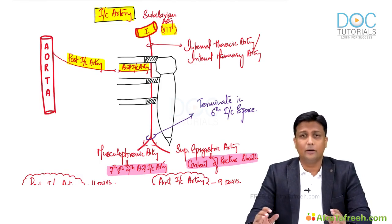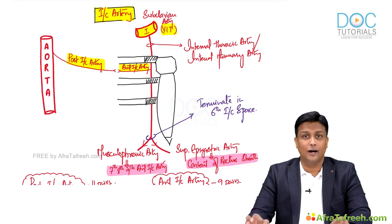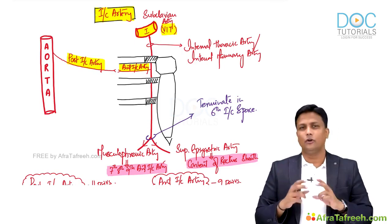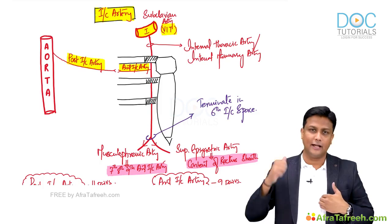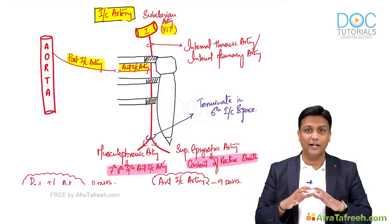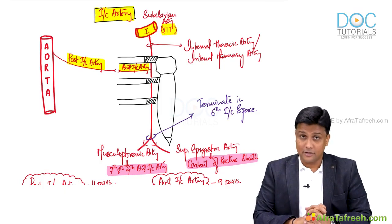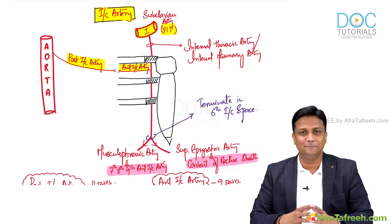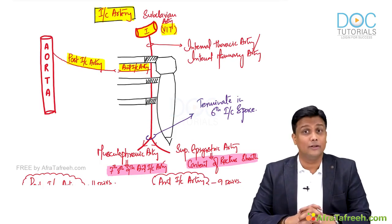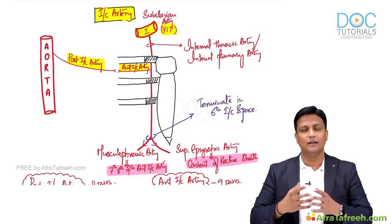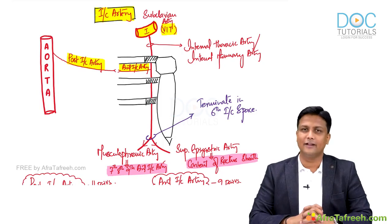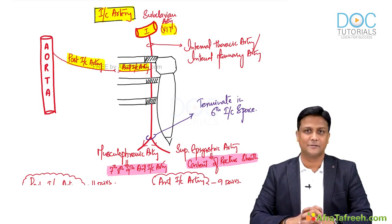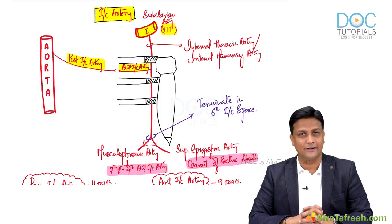In one diagram we completed the entire topic of intercostal arteries. Final summary: intercostal arteries are of two types — anterior and posterior. Posterior intercostal arteries: 11 pairs total; upper two given by superior intercostal artery, lower nine given by aorta. Anterior intercostal arteries: 9 pairs total; upper six given by internal thoracic artery; 7th, 8th, and 9th given by musculophrenic artery. The focus should be mainly on the numbers.